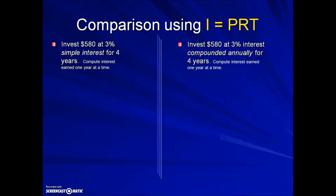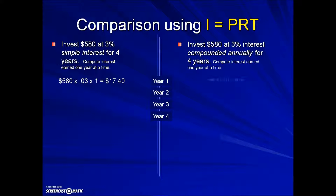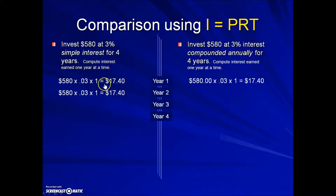Here's a side-by-side example of simple interest versus compound interest. We have the same principal — five hundred eighty dollars, three percent interest, for four years. In the first year, the interest is $17.40 for both — no difference — using principal times rate times time. In the second year, the same amount applies to simple interest because the interest earned the previous year is not used in calculating the next year's interest.